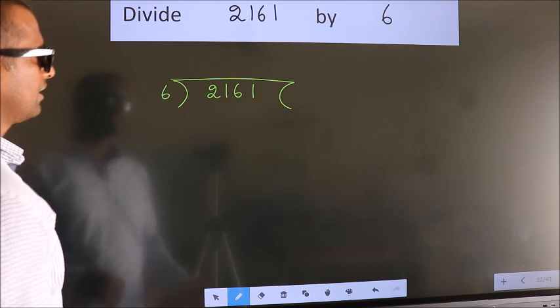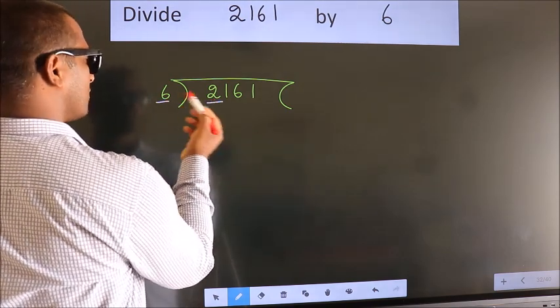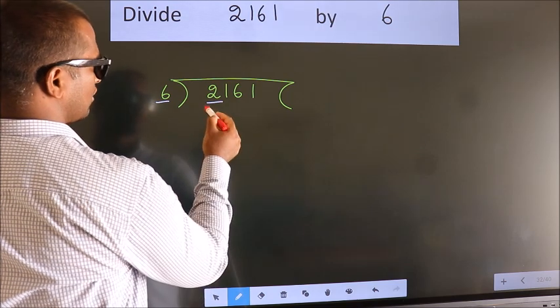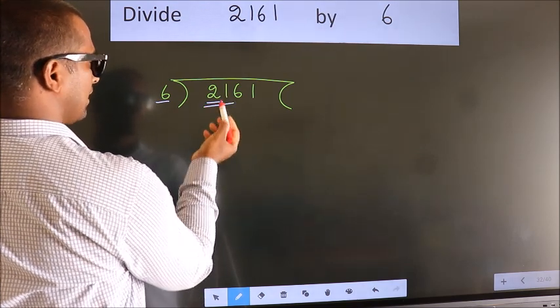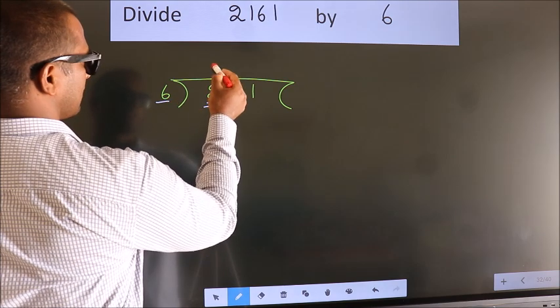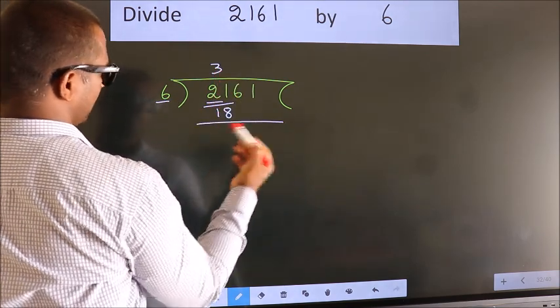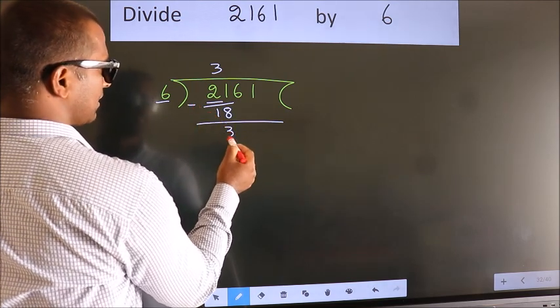Next, here we have 2, here 6. 2 is smaller than 6, so we should take 2 numbers: 21. A number close to 21 in the 6 table is 6 threes, 18. Now we should subtract. We get 3.